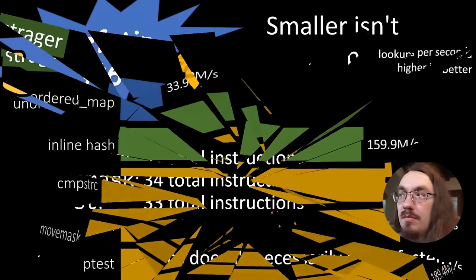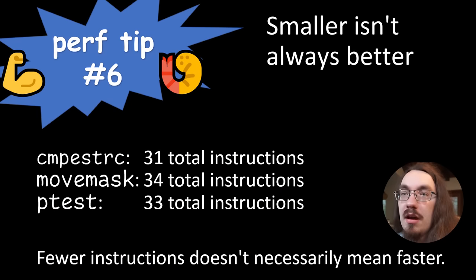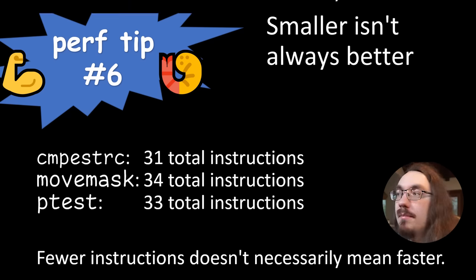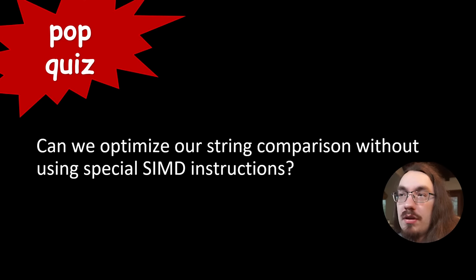So perf tip number six, smaller isn't always better. The CompyStirC solution was the smallest using only 31 total instructions for the entire algorithm, but it ended up being slower than both MoveMask and P-Test, which had more instructions. So fewer instructions doesn't necessarily mean faster. Even if the instruction seems to be dedicated to the specific task you're doing. Pop quiz. Can we optimize our string comparison without using special SIMD instructions? For example, just using normal integers.